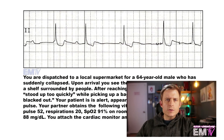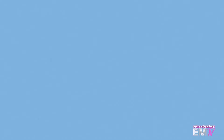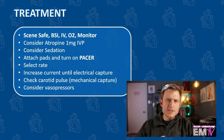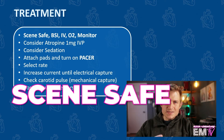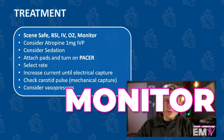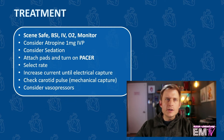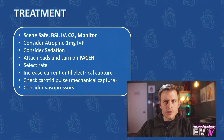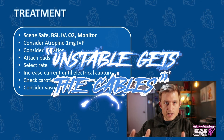Now let's take a look at the treatment. Just like with all my static cards, I'll begin treatment by following the mantra: scene safe, BSI, IV, O2, monitor. Because this patient is bradycardic, I'll then consider administering atropine 1mg IV push, and I can repeat this up to 3 times. But because my patient is unstable — and as the saying goes, unstable gets the cables.